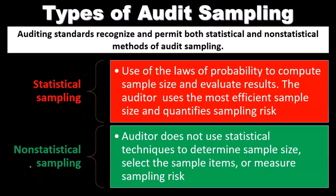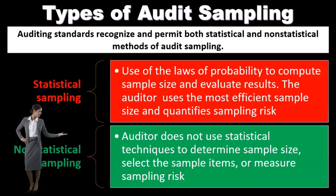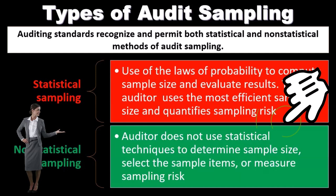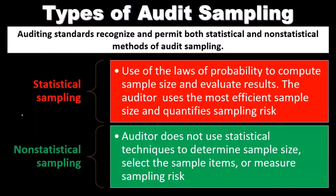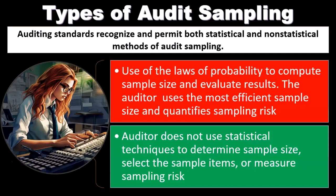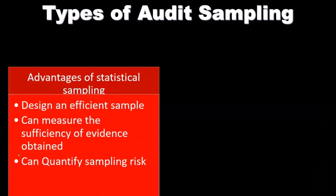Non-statistical sampling: the auditor does not use statistical techniques to determine sample size, select the sample items, or measure sampling risk. You might ask why would we do one or the other — why wouldn't we use statistical sampling when it seems to be the more accurate way to go? Part of that is going to be cost effectiveness and complexity with statistical sampling.